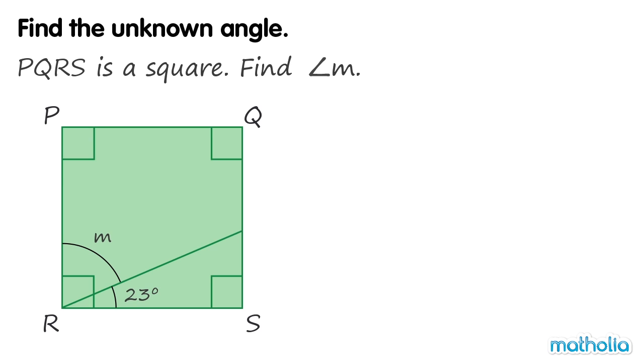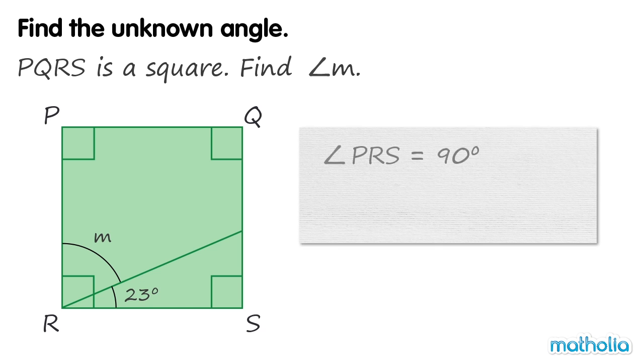Find the unknown angle. PQRS is a square. Find angle M. Angle PRS equals 90 degrees.